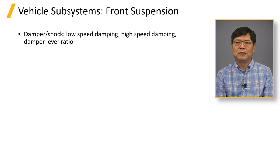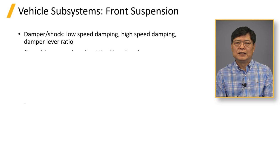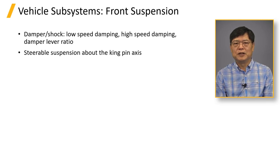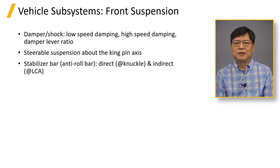The lever ratio concept is introduced to enable the wheel center equivalent. One remarkable feature of the front suspension is steering — the knuckle assembly rotates about the kingpin axis. A stabilizer bar, or anti-roll bar, provides resistance to suspension roll motion.